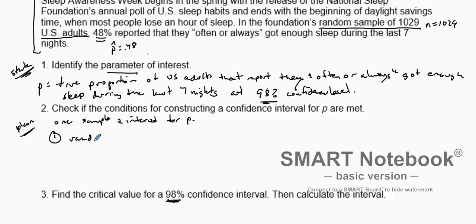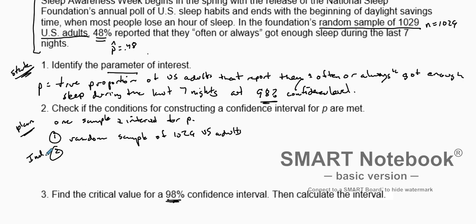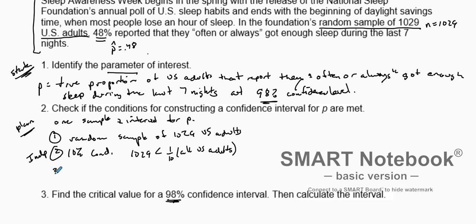To do that, we first have to check: do we have a random sample? Yes, we have a random sample of 1029 US adults — that's in our population of interest. Second, we have to make sure we have independence so we can use the standard error formula. For independence we use the 10 percent condition: is 1029 less than 10 percent of all US adults? Yes, that's a pretty good indication.